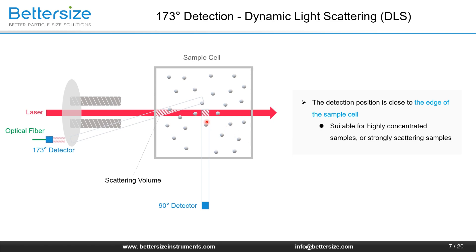When the detection position is close to the edge of the sample cell, the laser beam does not need to penetrate the sample, which can effectively minimize the multiple scattering effects of high concentration samples and ensure the accuracy and repeatability of the particle size results in the high concentration range. However, due to its optical design, the scattering volume is so small that it impairs the sensitivity of the instrument, and therefore the instrument is not competent to measure small particles, weakly scattering samples, or very diluted samples under this condition.